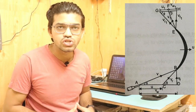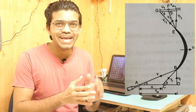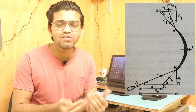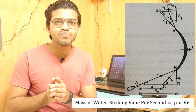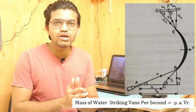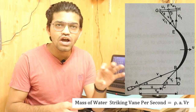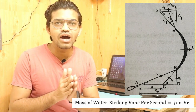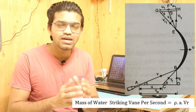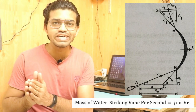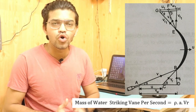Now let's begin the calculations. The mass of the water jet striking the vane per second can be calculated using the formula: mass equals rho times a times vr, where rho is the density of water, a is the cross-sectional area of the water jet, and vr is the relative velocity. This gives us the total mass of water striking the vane per unit time.